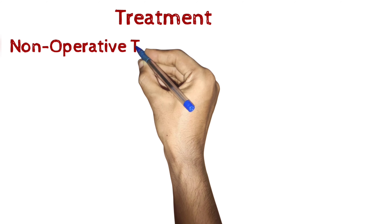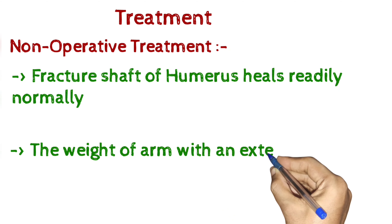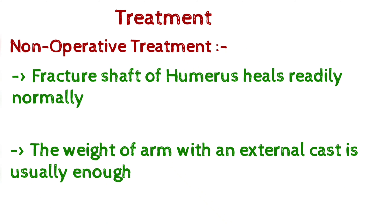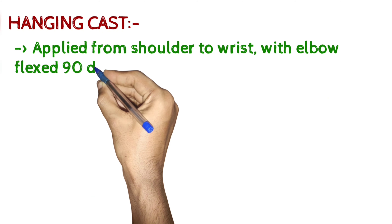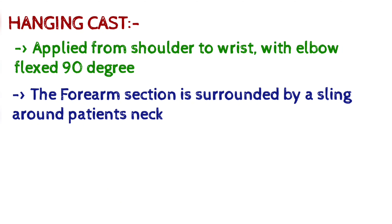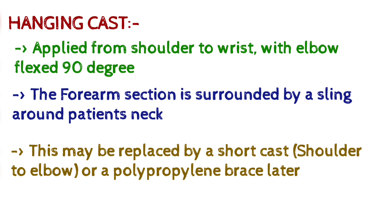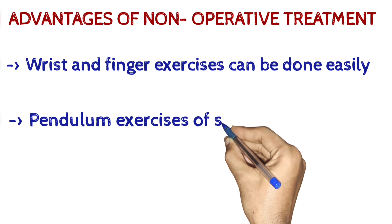Treatment — Non-operative: Fracture of the shaft of humerus heals readily. The weight of the arm with an external cast is usually enough. A hanging cast applied from shoulder to wrist with elbow flexed 90 degrees is used; the forearm section is suspended by a sling around the patient's neck. This may be replaced by a short cast from shoulder to elbow, or a polypropylene brace later. Wrist and finger exercises can be done easily, and pendulum exercises of the shoulder can be started within a week.